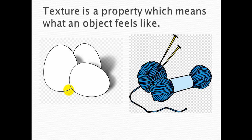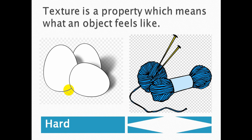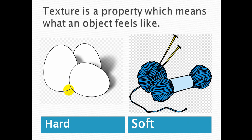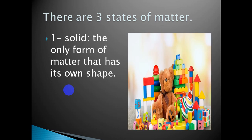Another property is texture. Texture is a property that means what does an object feel like — what will you feel when you touch something? Will it be hard, like these eggs, or will it be soft? Any matter around us takes one of three states, so there are three states of matter.